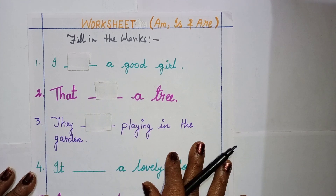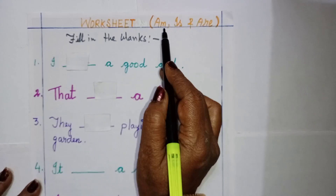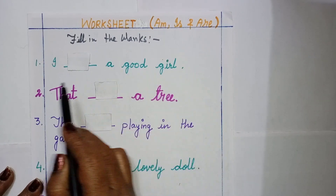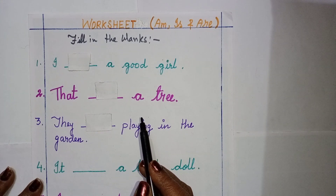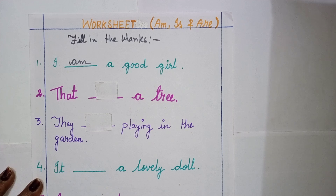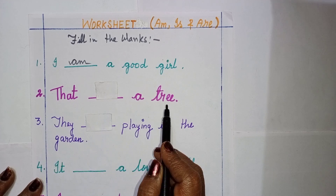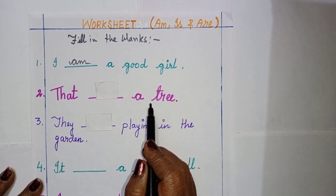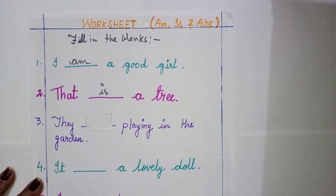Number one: I dash a good girl. So you just guess — will it be I is, or I am? It will be I am. See, I have already written for you: I am. Next, you see children, there is a tree — it is indicating one thing, so it will be: that is a tree.